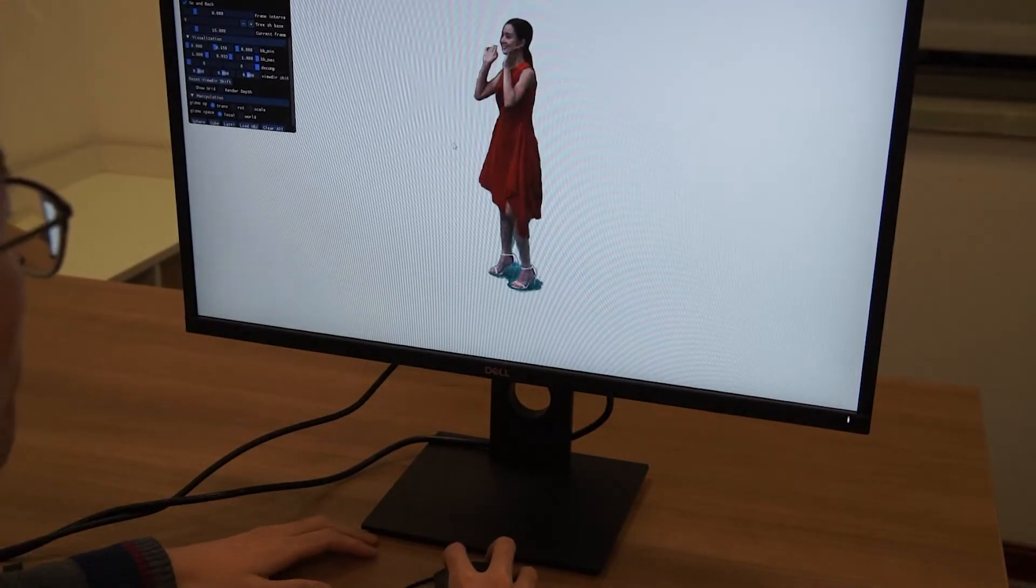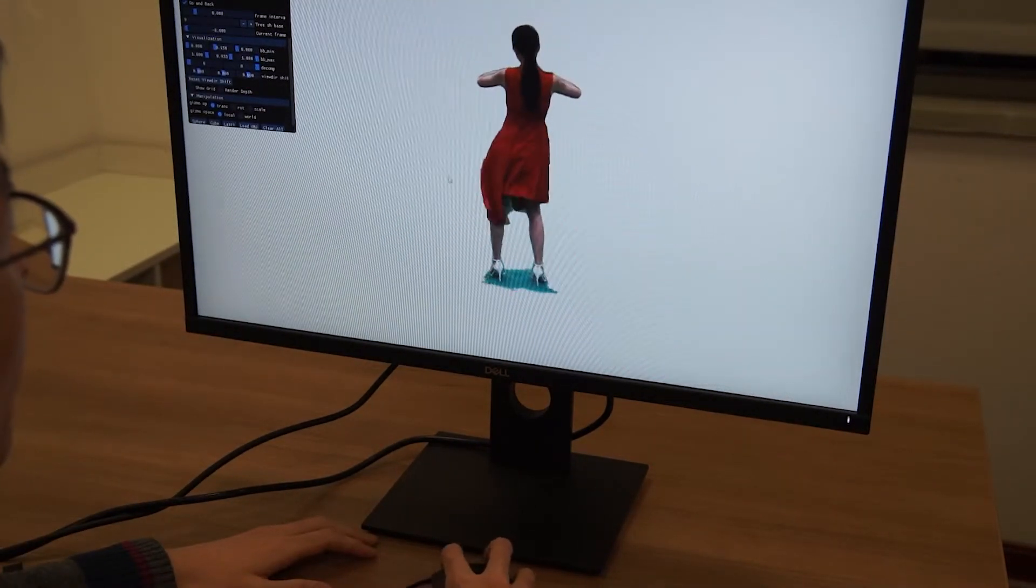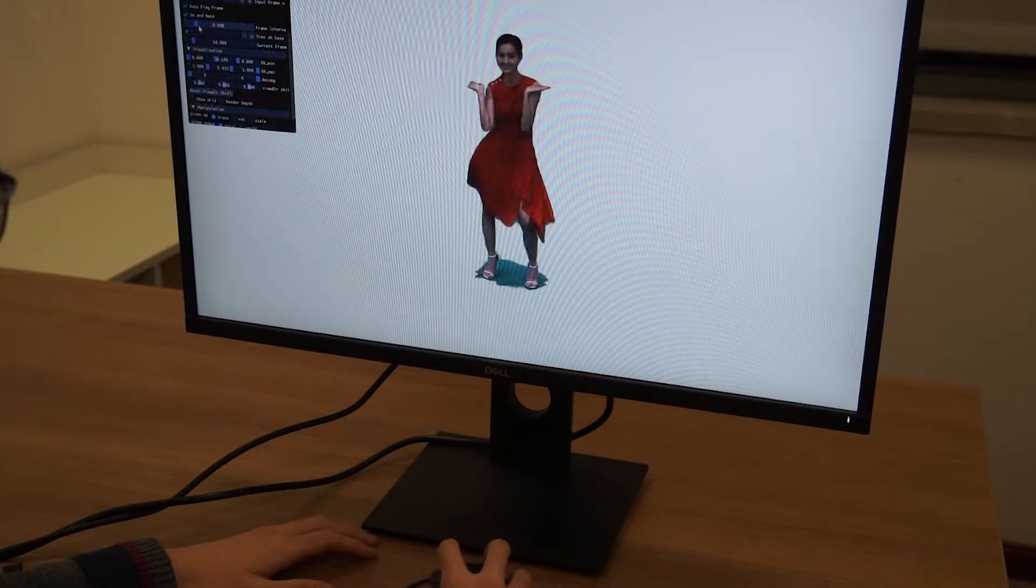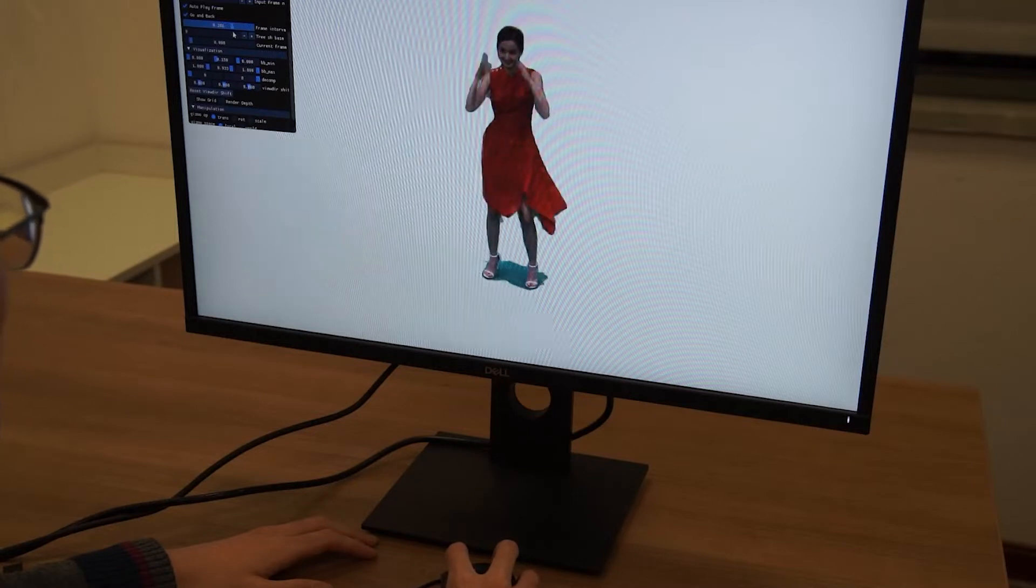We have implemented a real-time dynamic scene viewer based on Fourier Plenochtree. We can watch a sequence from free viewpoint and change the playing speed at the same time.